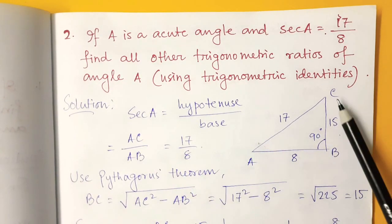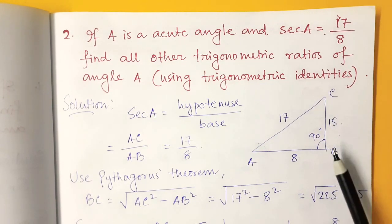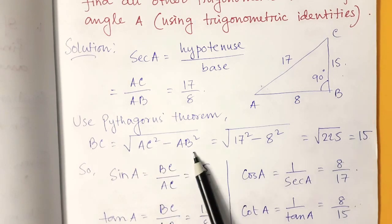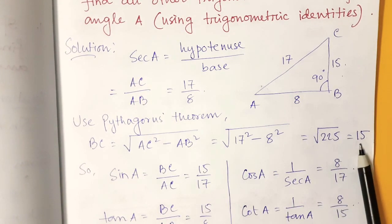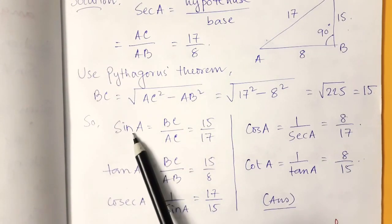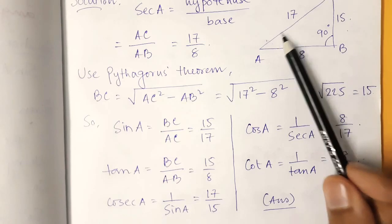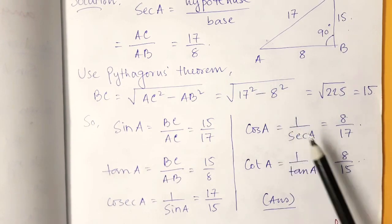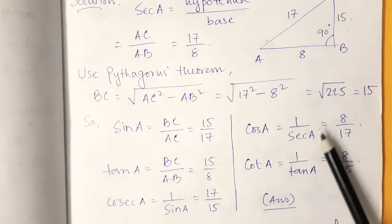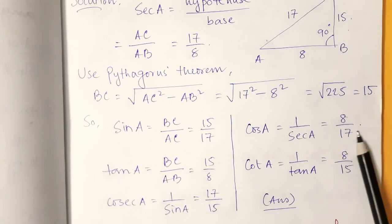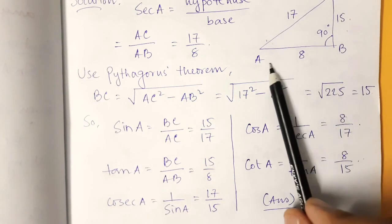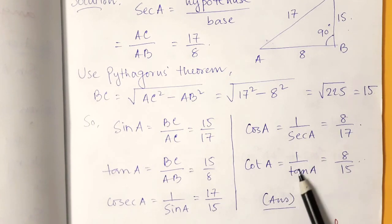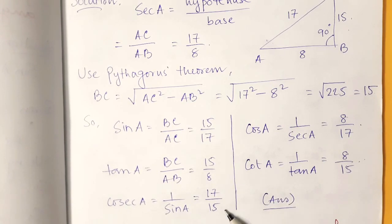Again using Pythagoras theorem, we need the length BC. BC equals root over AC² minus AB². After calculation, we get BC equals 15. So sin A is perpendicular by hypotenuse: BC by AC = 15 by 17. Cos A is 1 by sec A = 8 by 17. Tan A is perpendicular by base = 15 by 8. Cot A is 8 by 15, and cosec A is 17 by 15.